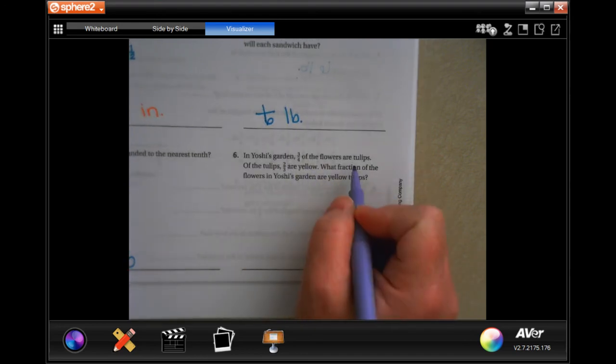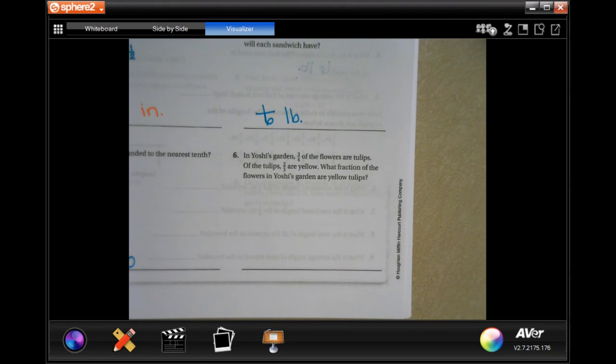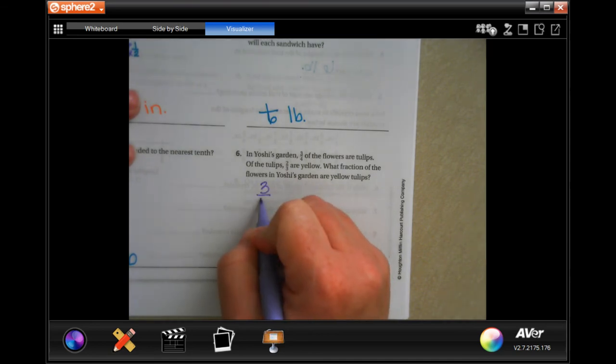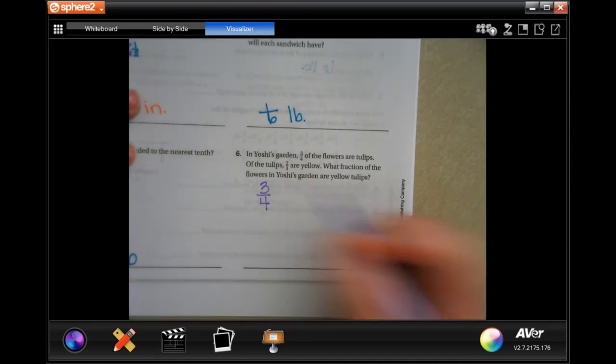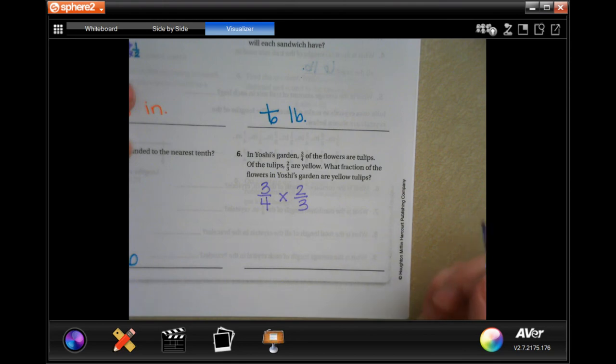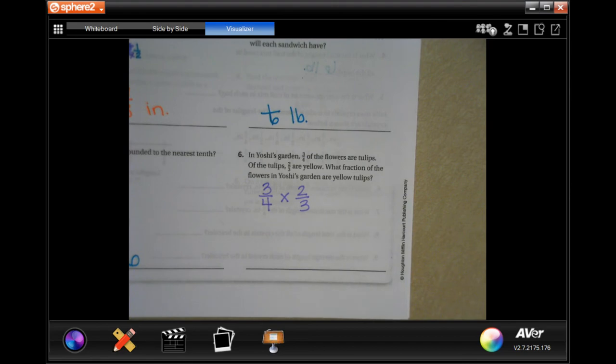In Yoshi's Garden, three quarters of the flowers are tulips. Of the tulips, two thirds are yellow. What fraction of the flowers in Yoshi's Garden are yellow tulips? Three quarters of the tulips are tulips and two thirds of them, of means multiplied, are yellow.